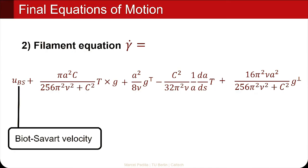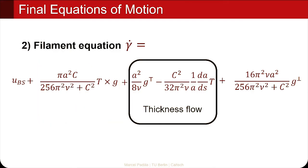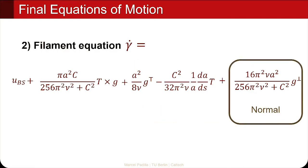The second equation of motion describes the deformation of the filament geometry. The first term is given by the Biot-Savart velocity field. Interestingly, if we assume that viscosity is zero and gravity is zero, this entire equation collapses to just this very first term, which is consistent with previous vortex filament methods — so this is really an extension of prior work. The new terms describe the lift acting on the vortex filament, the flow of thickness along the tangential part, and an additional normal component describing the effects of gravity not tangent to the filament.